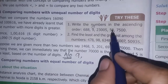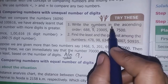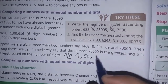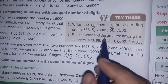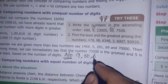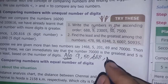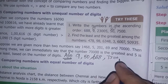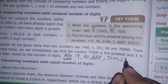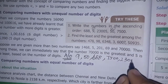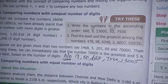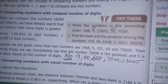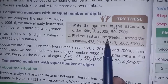The next number is 50. Next number is 688. Next is 7500, and next will be 23005. That is how simple it is.